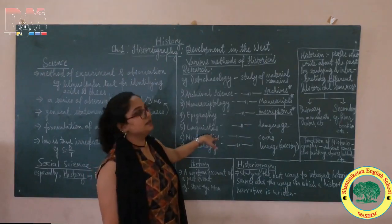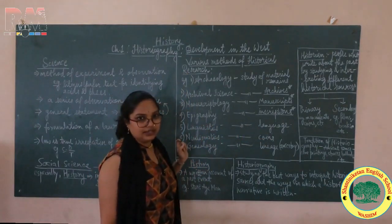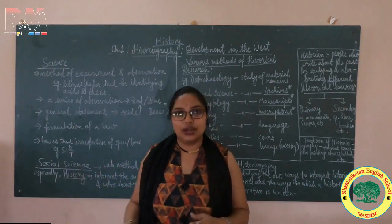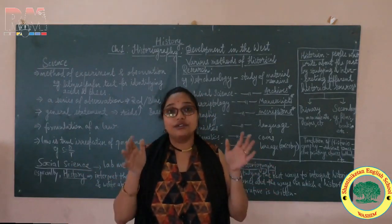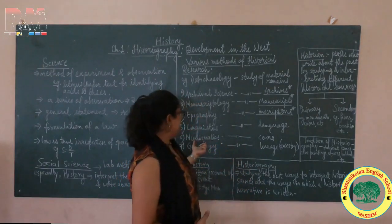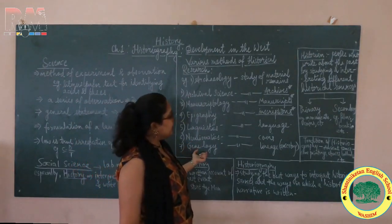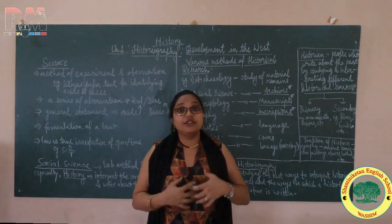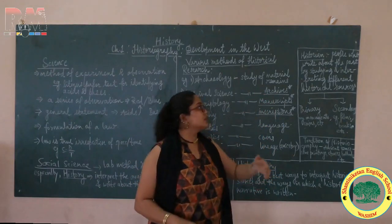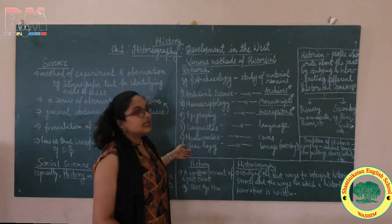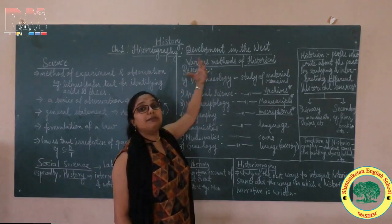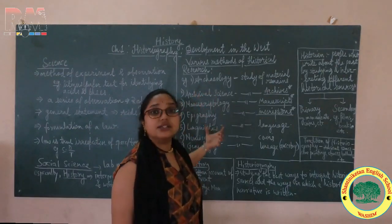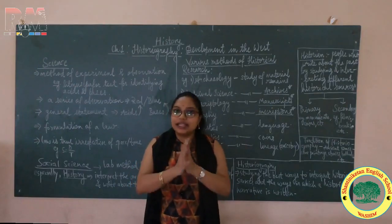Linguistics is the study of language — another method of historical research. Then numismatics is the study of coins. Different times in history had different coins and currencies, and the study of these coins is called numismatics. Then genealogy is the study of lineage — meaning ancestry. It is the study of the family tree of a particular clan. These are all methods we can use for historical research — we don't have to use all at once, but can use a combination of two or three depending on the type of research.